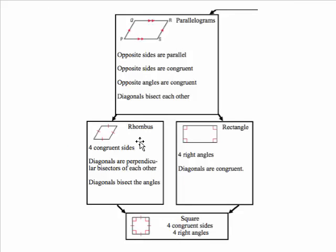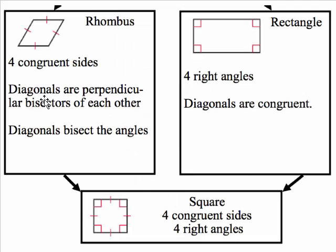Now we're going to look at specific types of parallelograms: rhombuses, rectangles, and squares, which are all types of parallelograms. Rhombuses have four congruent sides, which you'll notice with the tick marks on all four sides. The diagonals are perpendicular bisectors of each other — so if we draw both diagonals, they bisect each other at a right angle.